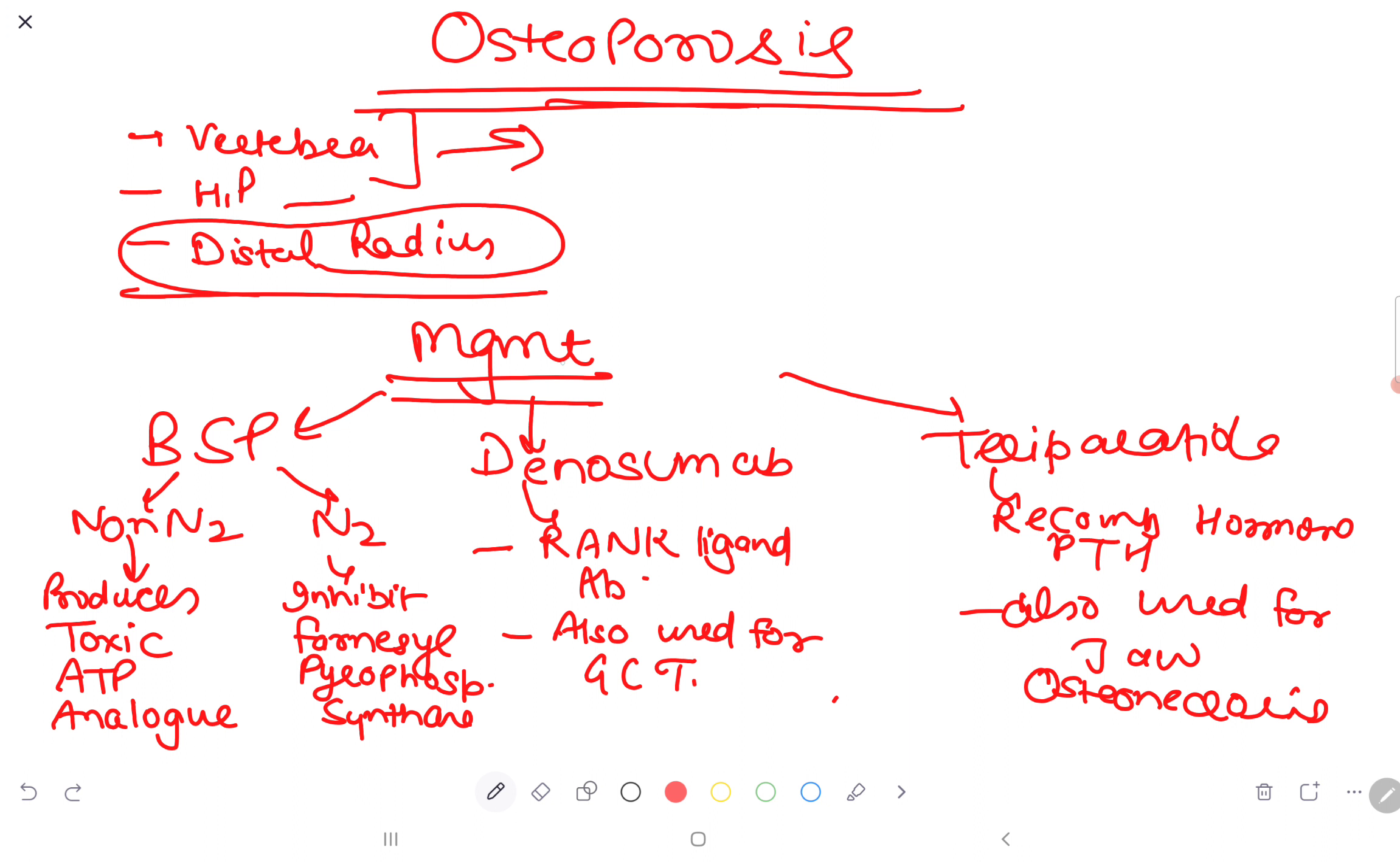Management is done mainly with bisphosphonates. Bisphosphonates are of two types: non-nitrogen containing and nitrogen containing. Non-nitrogen containing works by producing toxic ATP analog, and nitrogen containing inhibits farnesyl pyrophosphate synthase.